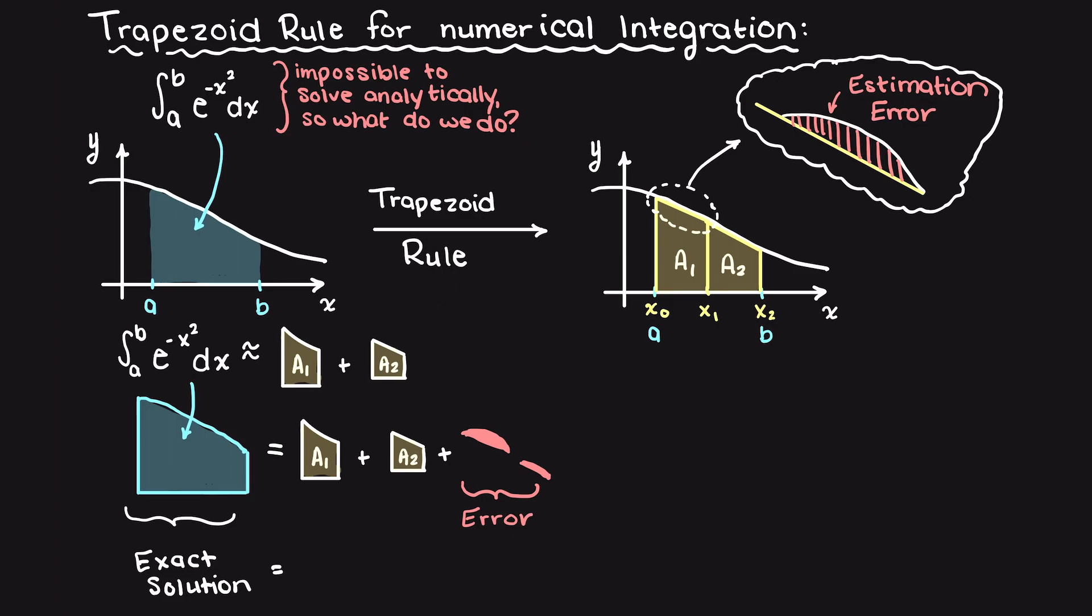Then adding areas A1 and A2 together approximately gives us the same area. Then, the difference between the two sides of our approximate sign here will be our trapezoid rule error term, which is all the overestimation and underestimation error we briefly mentioned earlier. This error will be talked about in a future video, but just keep it in mind.